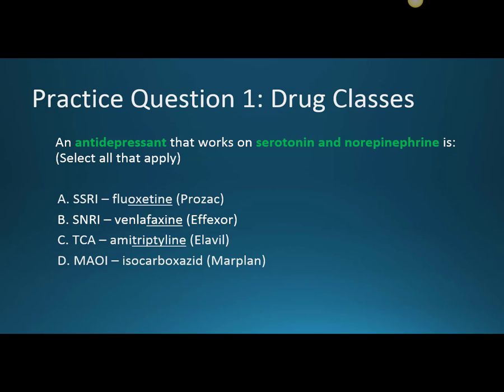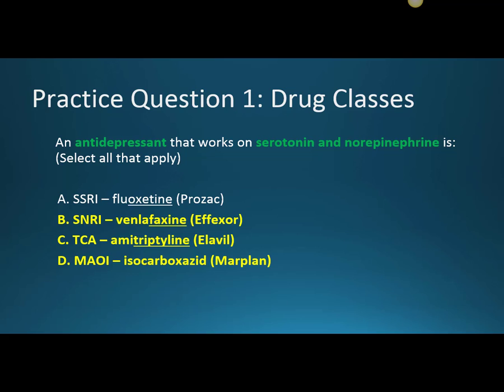Let's look at an example. Question one is a select-all-that-apply: an antidepressant that works on serotonin and norepinephrine is? We have the options SSRI, SNRI, TCA, and MAOI. The correct answer is B, C, and D.